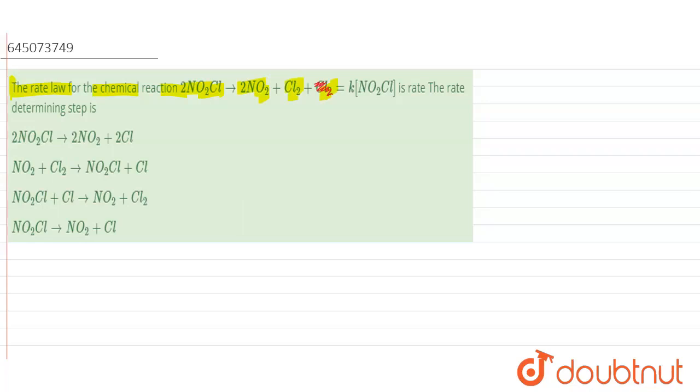So it is only 2NO2 plus Cl2 and it is given by K times NO2Cl. Now, the rate determining step is what we need to find out.